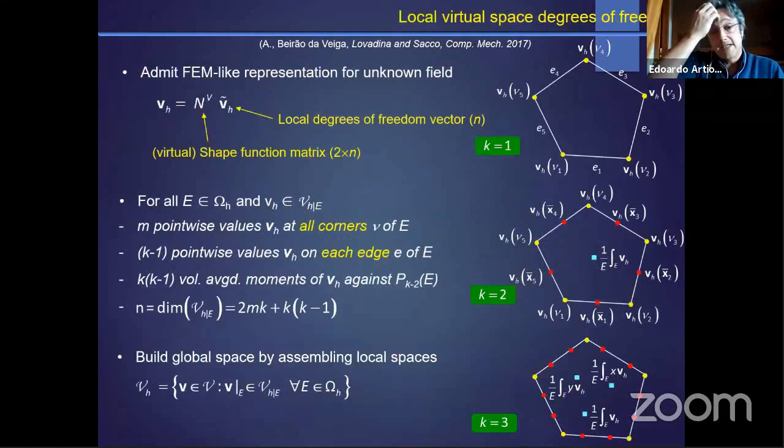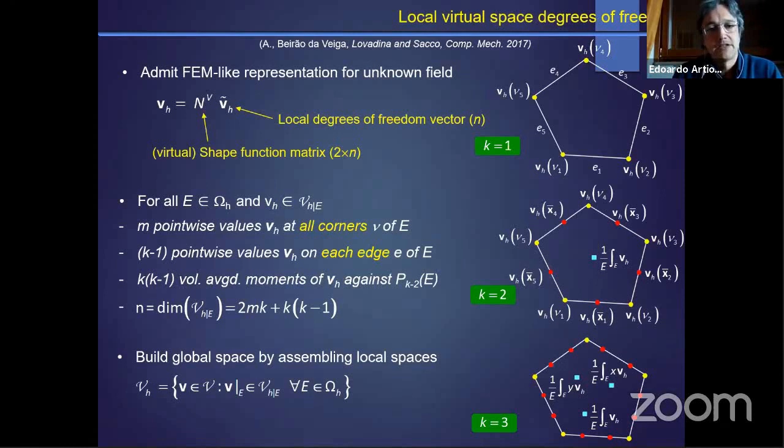Again, very much in FEM fashion, we have a FEM-like representation of the unknown field, namely the discrete approximated displacement will be a linear combination of some virtual shape functions through local degrees of freedom, which are defined with respect to the order of the method. So for instance, looking at the pentagon on the right column, if we do linear virtual elements, we have that our degrees of freedom will be the local values at the vertices of the displacement. If we go to quadratic, we have also